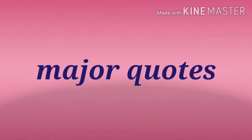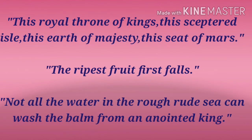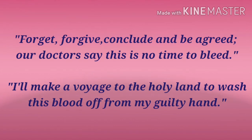Major quotes from the play include: 'This royal throne of kings, this sceptered isle, this earth of majesty, this seat of Mars' — by John of Gaunt, Act 2 Scene 1. 'The ripest fruit first falls' — King Richard, Act 2 Scene 1. 'Not all the water in the rough rude sea can wash the balm from an anointed king' — King Richard, Act 3 Scene 2. 'Forget, forgive, conclude and be agreed, our doctors say this is no time to bleed' — a card from Henry in the final act. 'I'll make a voyage to the Holy Land, to wash this blood off from my guilty hand.'